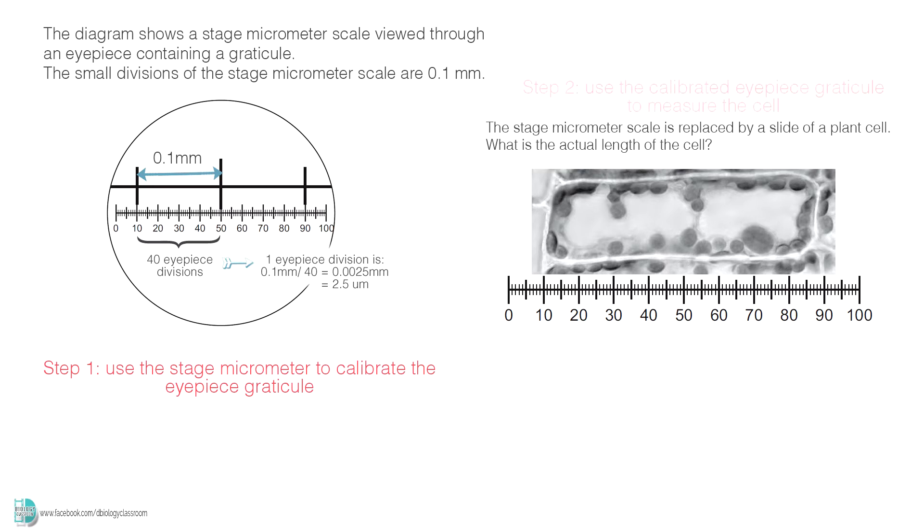Then, by referring to the diagram, you can see that the cell is equivalent to 78 divisions of the eyepiece graticule. Since each division is 2.5 micrometer, 78 of the divisions are 195 micrometer. This is the length of the cell.